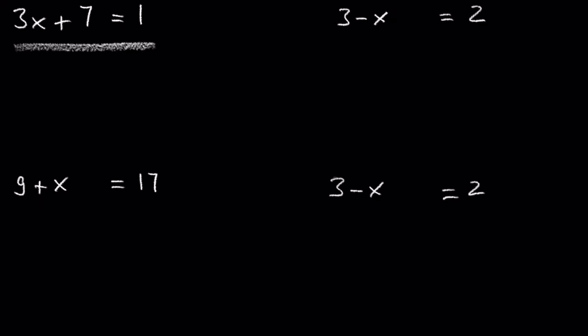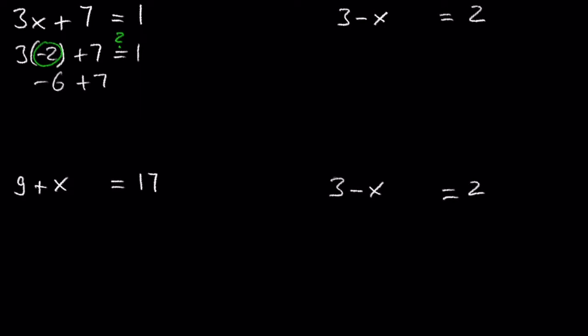Is negative 2 a solution of 3x plus 7 is equal to 1? Remember, a solution of an equation is a number that when substituted for the variable results in a true equation. Let's substitute negative 2: 3 times negative 2 is negative 6, plus 7 is equal to 1. Negative 6 plus 7 is 1, which equals 1 — yes, negative 2 is a solution.